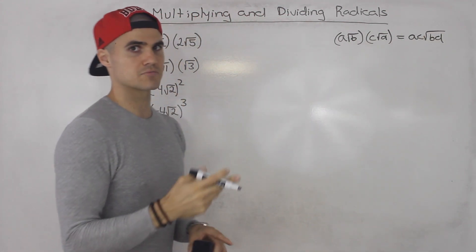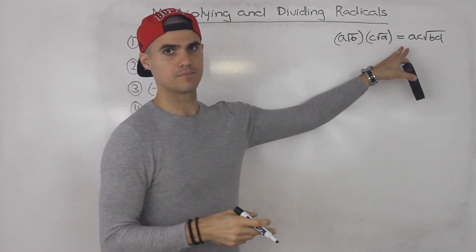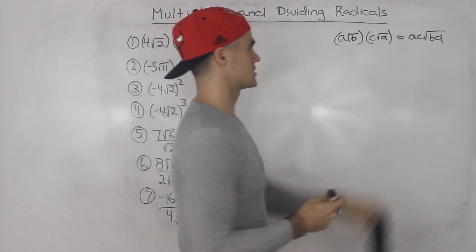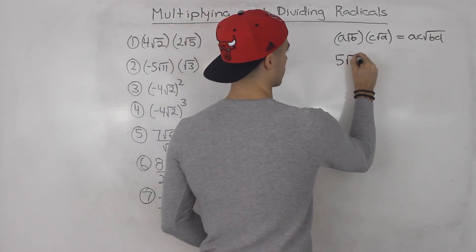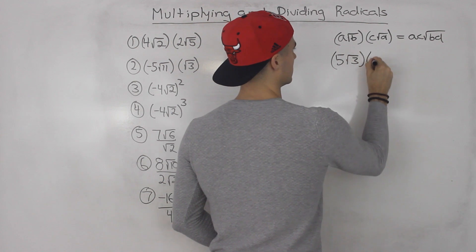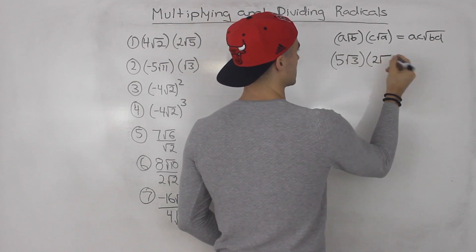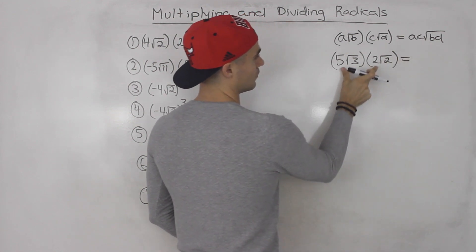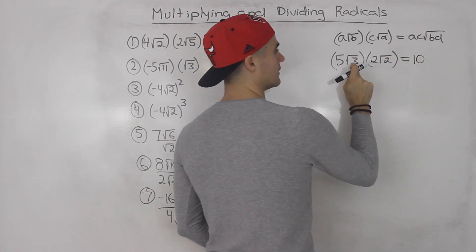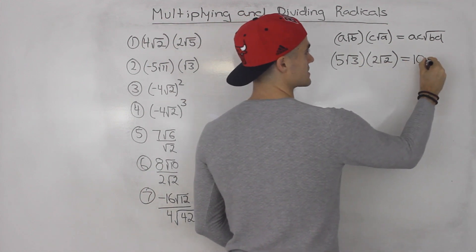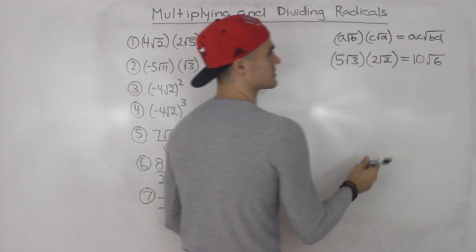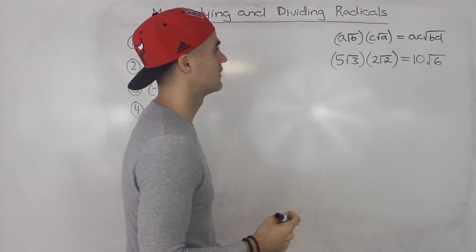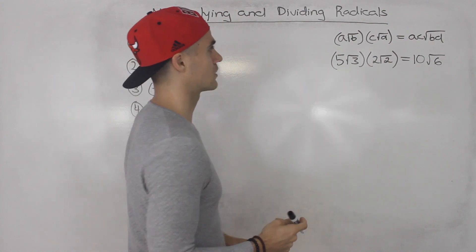Remember when we were adding and subtracting, the radicals stayed the same. Well, when we are multiplying or dividing, the radical actually changes. For example, 5√3 times 2√2: 5 times 2 gives us 10, and then 3 times 2 gives us 6, so this would be 10√6. Then you would see if you could simplify further, but √6 we can't simplify. So that's how multiplying works.